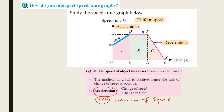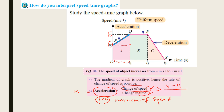You can calculate your acceleration as the change of speed divided by the change in time — that is the gradient. So from this graph, if I want to find the acceleration, the change of speed is v minus u, divided by the change in time, which is t1 minus 0, so t1. This is the formula for acceleration; we will do examples later.